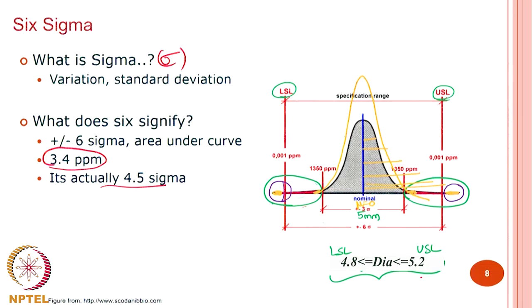Six sigma only tells you how far you can go from the mean, and it should be at the lower and upper specification limits because anything beyond that is your failure. Anything beyond LSL and USL is failure. So this is the spread I can have; beyond that it is failure. If the number of failures is not acceptable, I need to make my distribution thinner so that failures get reduced. You normalize the data and use the same chart — it is simple.